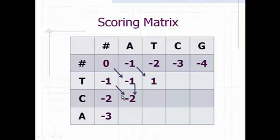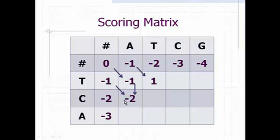For the next box, from the top we had minus 1 plus gap penalty minus 1 giving minus 2. From the left side, minus 2 plus gap penalty minus 1 gives minus 3, which is minimum. From the diagonal we have minus 1, and for the mismatch of C and A, we add mismatch score minus 1, giving minus 2. From the top side we get minus 2, from the diagonal side we get minus 2. So we take minus 2. In this same manner we fill up all of the boxes.